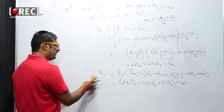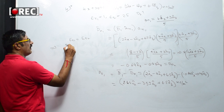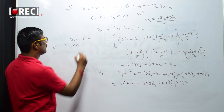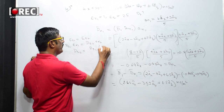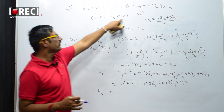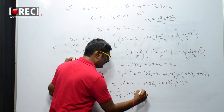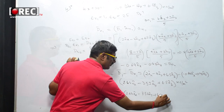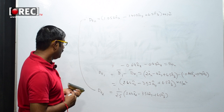Applying the boundary condition E_T1 = E_T2, which gives D_T1/ε_r1 = D_T2/ε_r2, so D_T2 = D_T1 × (ε_r1/ε_r2) = (1/2.5) × (2.64âx - 3.52ây + 6.5âz). This yields D_T2 = 1.056âx - 1.408ây + 2.6âz nC/m².